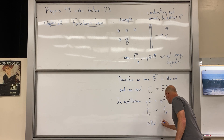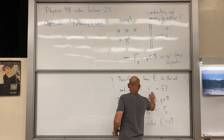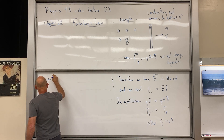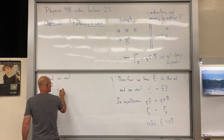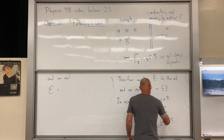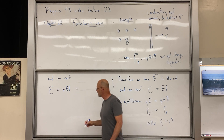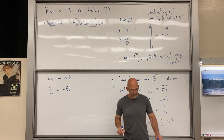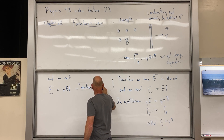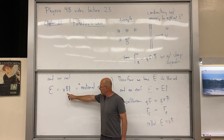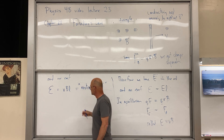So E = VB, and plugging that in, our EMF equals V times B times L. We call that the motional EMF. Notice: as soon as you stop moving — it depends on V — you lose it. So if you're moving, you get this motional EMF, and remember that's a voltage, a potential.